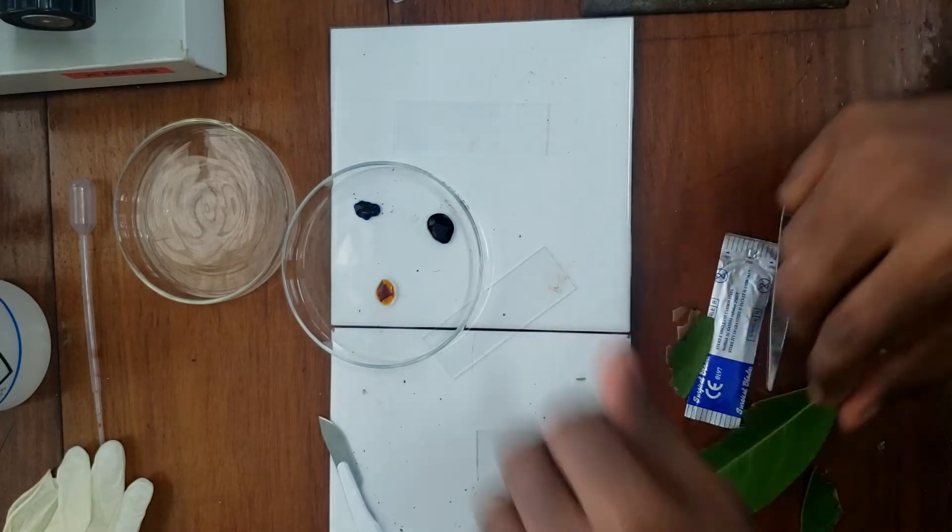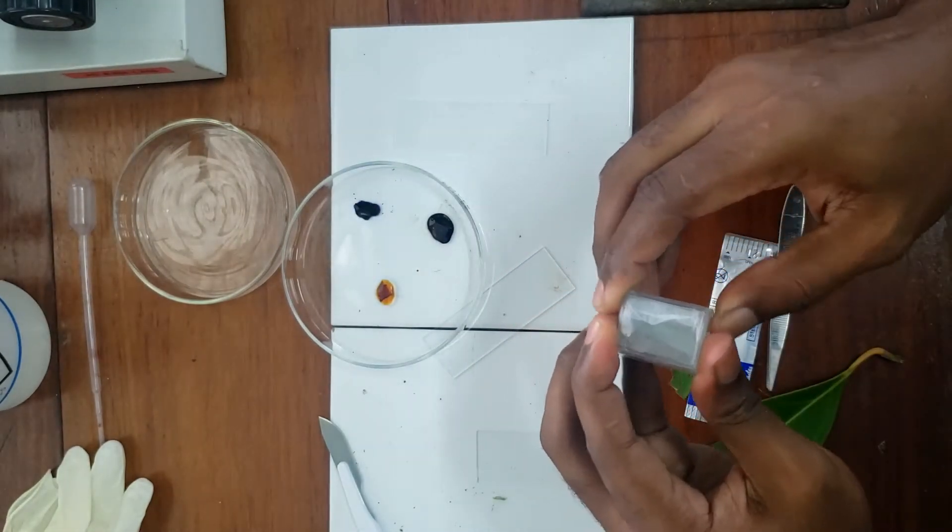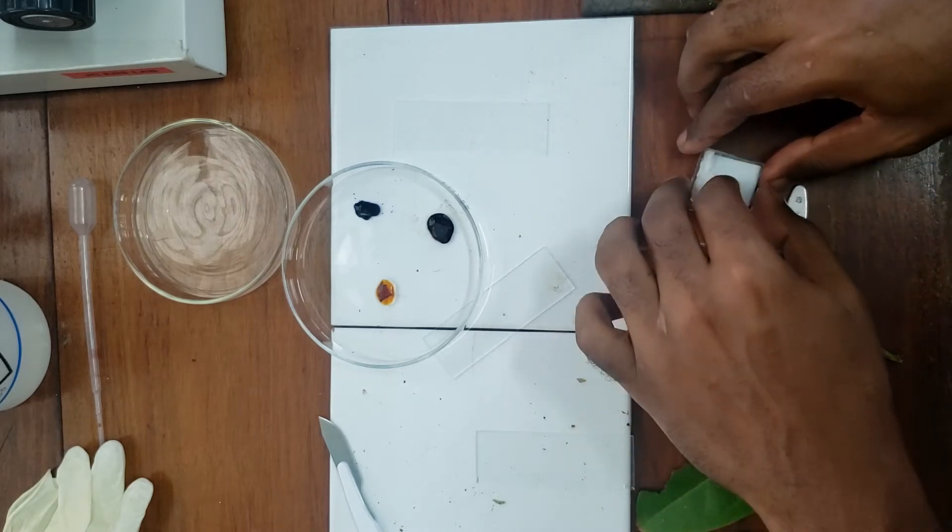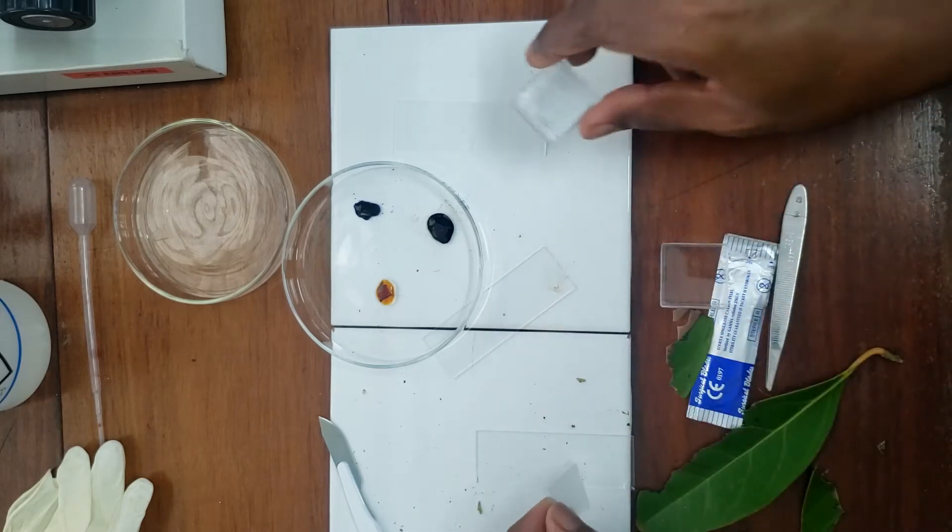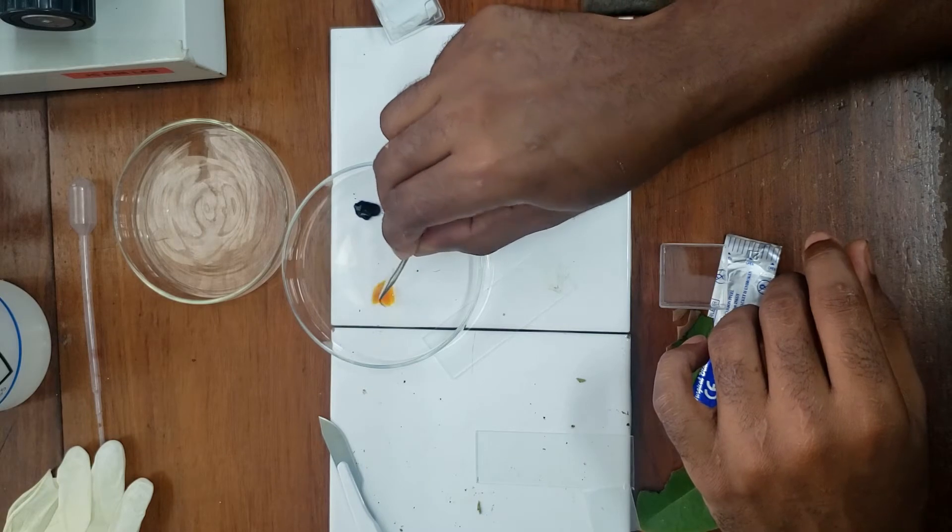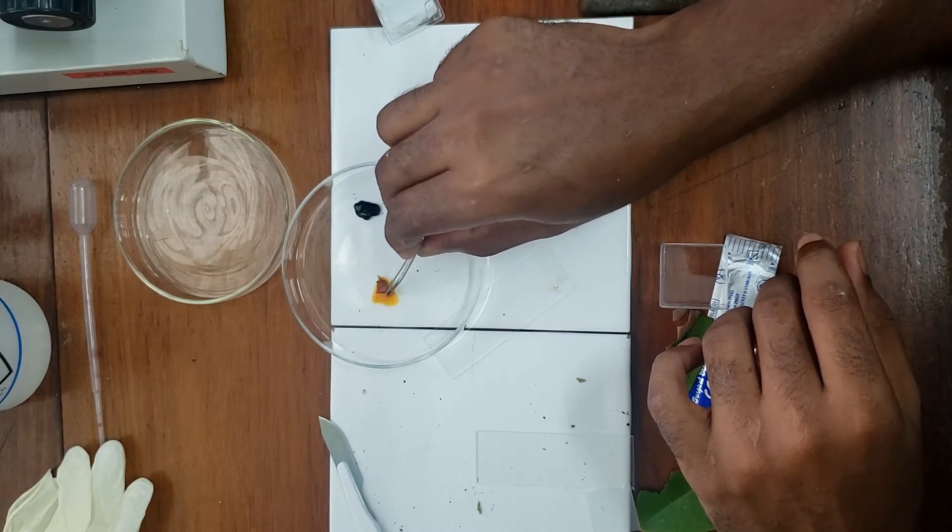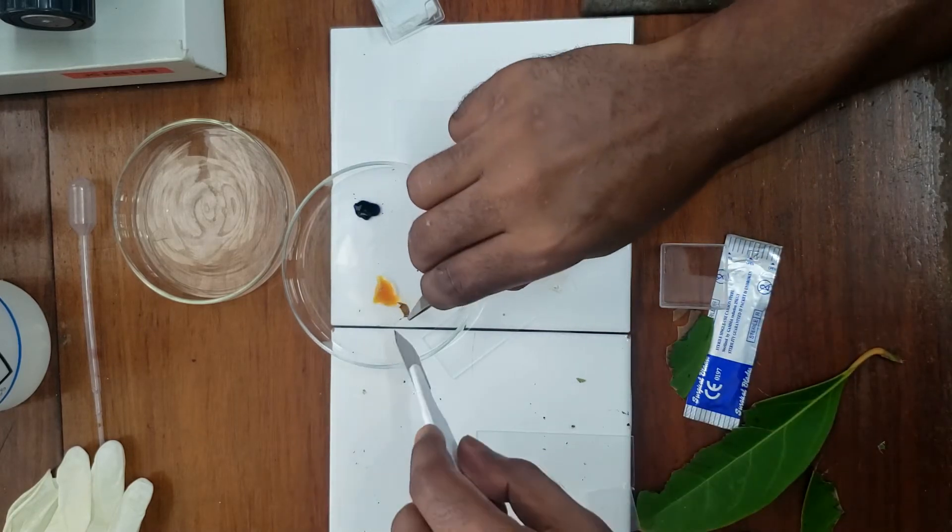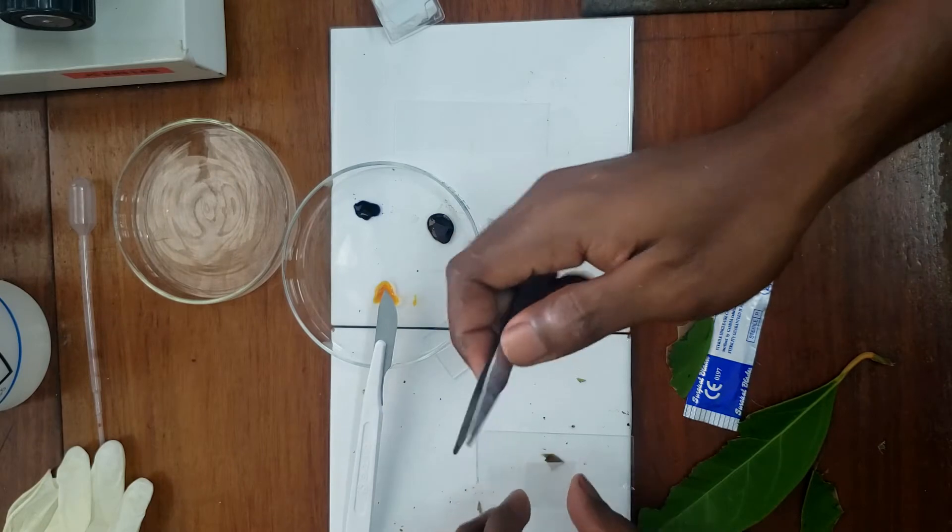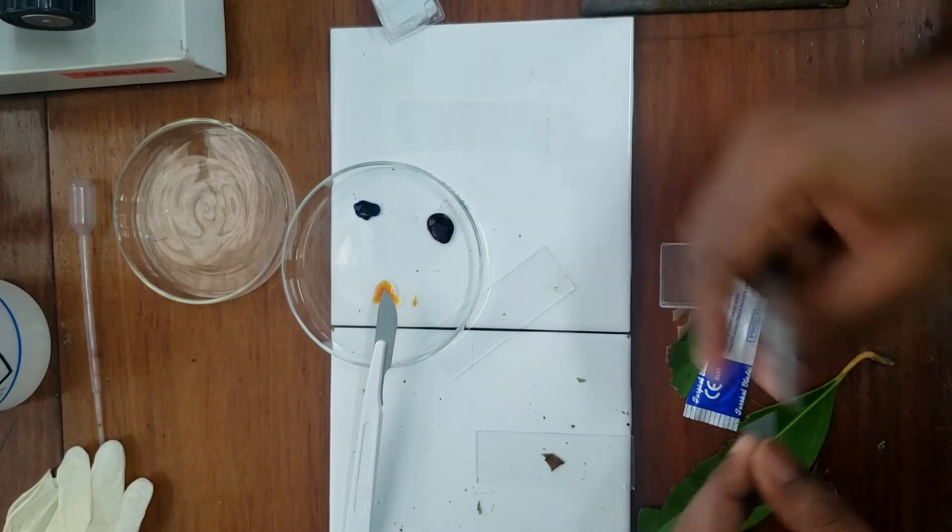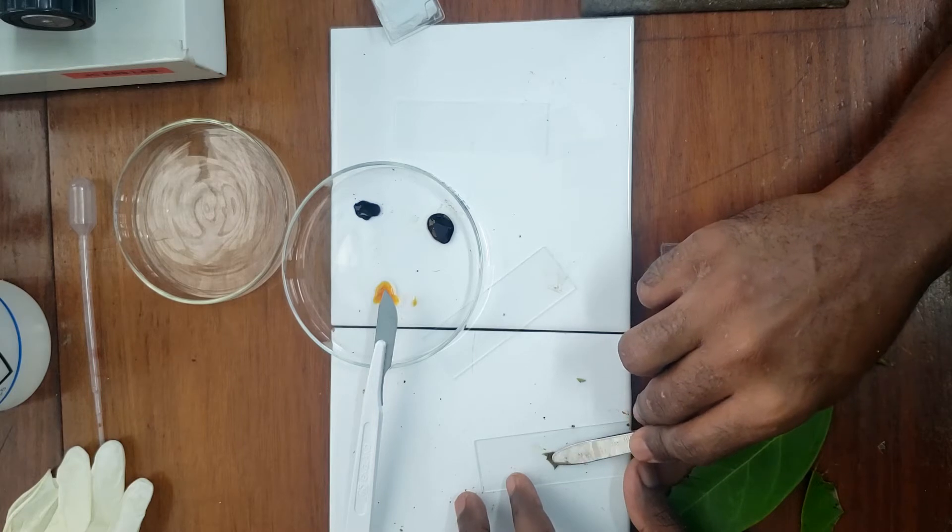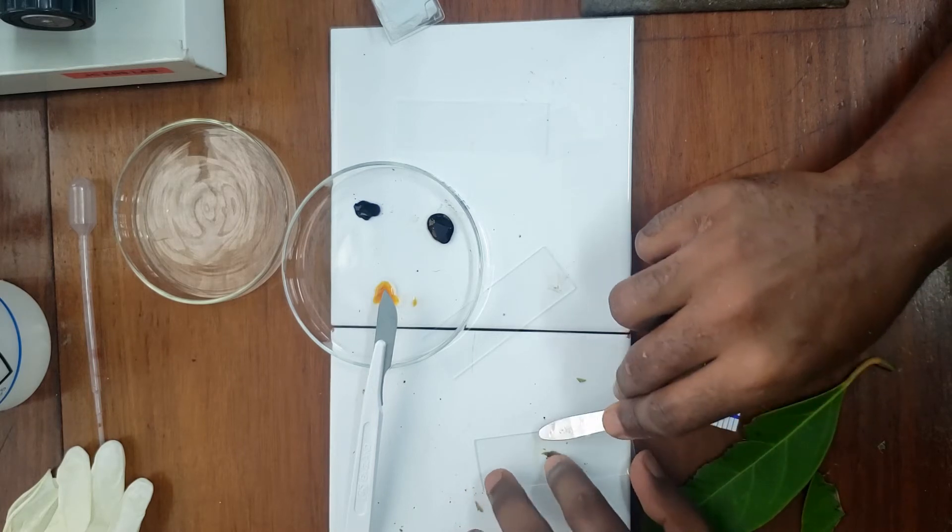So let's prepare our first slide. We have a slide here. Let's get some cover slips. So I'll just get that out, the iodine, shake it off a bit.